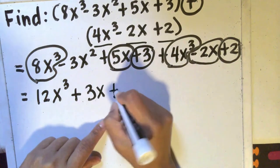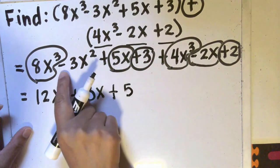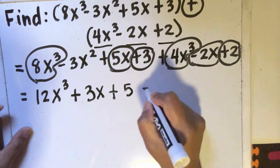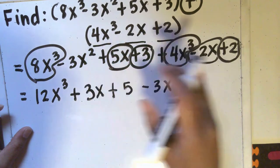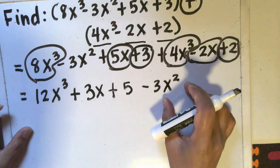Now negative 3x² will stay the same because I did not have to combine it with anything. I don't see any other terms that has x² in it.